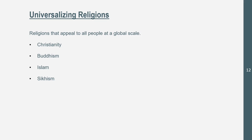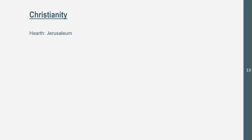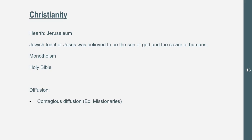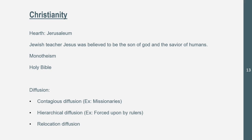Let's get into the four universalizing religions. Christianity: the hearth is in Jerusalem. It was formed when a Jewish teacher named Jesus was believed to be the son of God and the savior of humans. The religion is monotheistic — they believe in one God. Their sacred text is the Holy Bible. It spread through contagious diffusion, for example through missionaries; hierarchical diffusion, such as being forced upon by rulers; and relocation diffusion through migration.